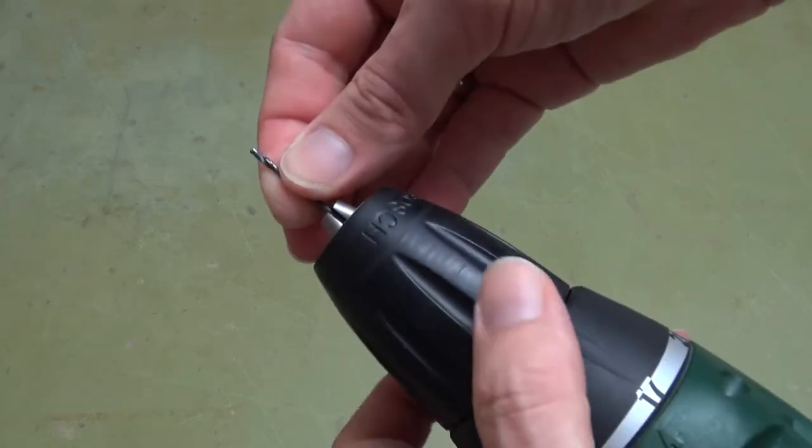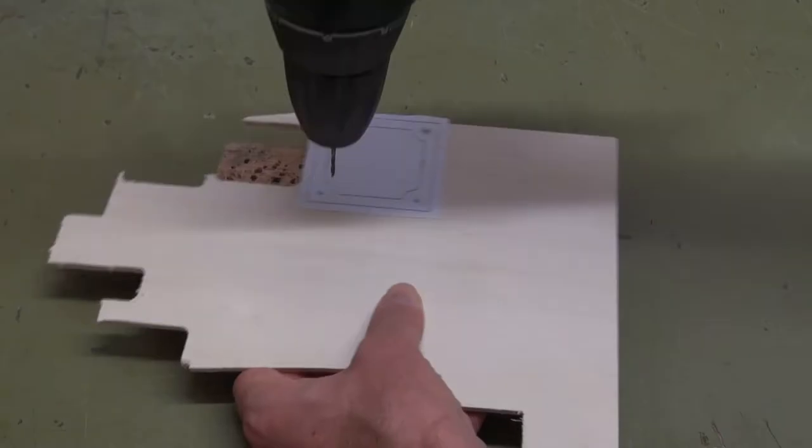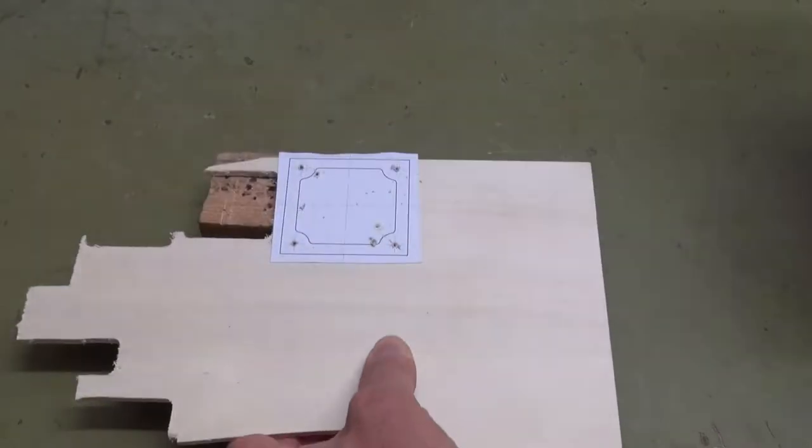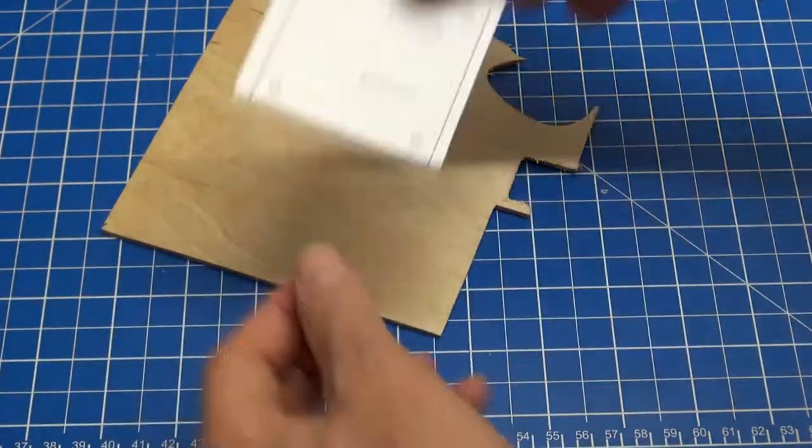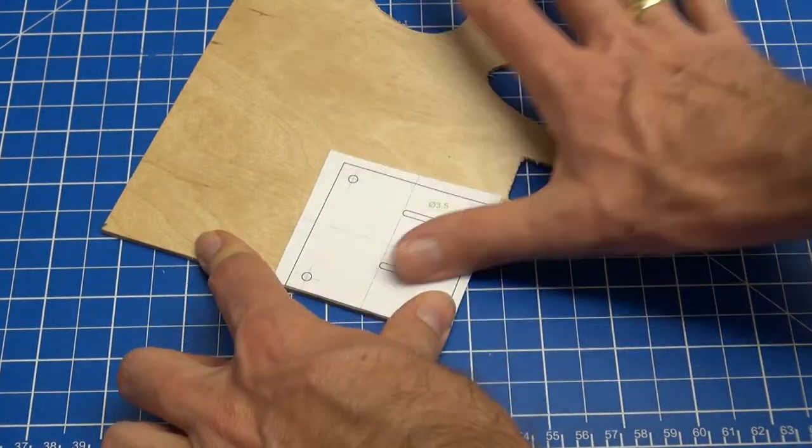Drill the 2mm holes and also one or two holes in the middle section to insert the jigsaw. Do the same for the mounting plate, this time using a 3.5mm drill.